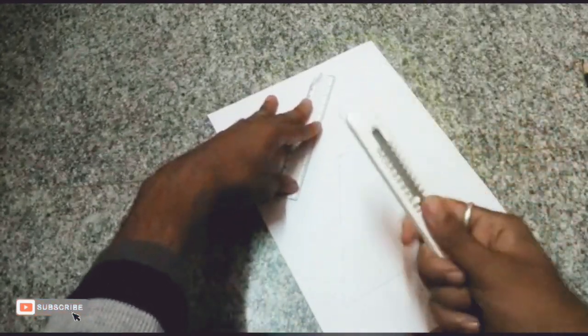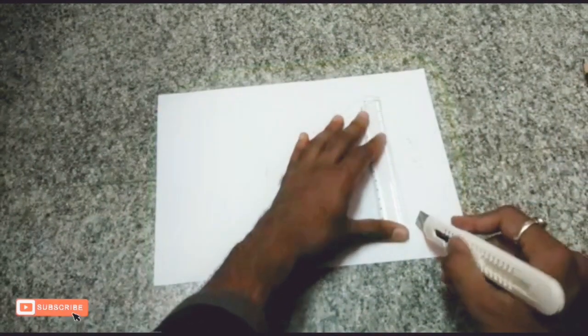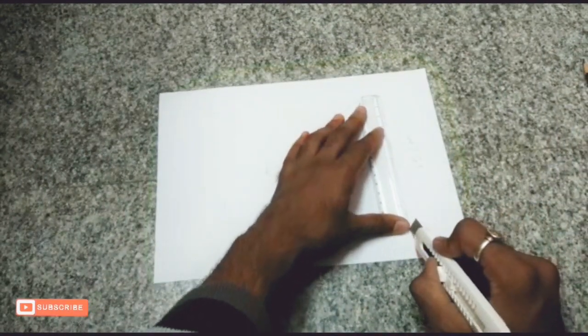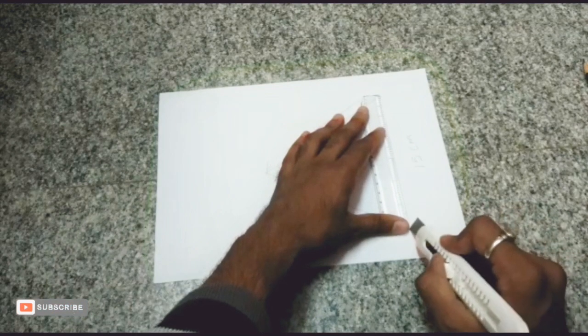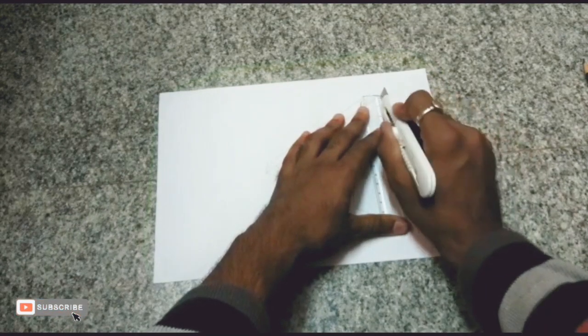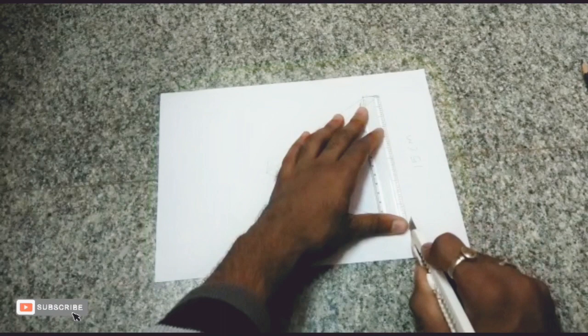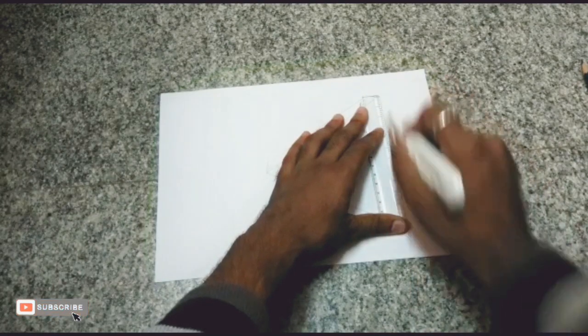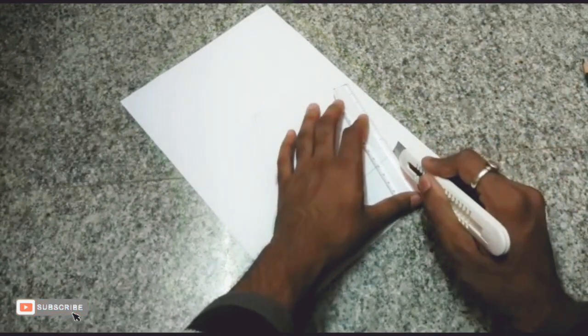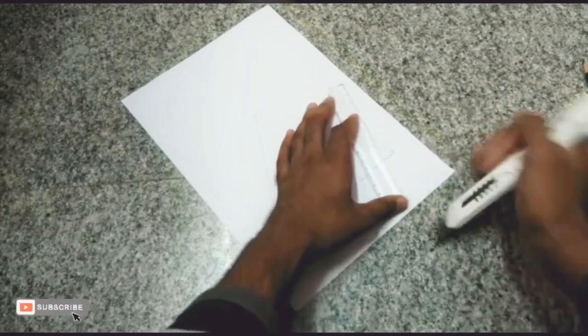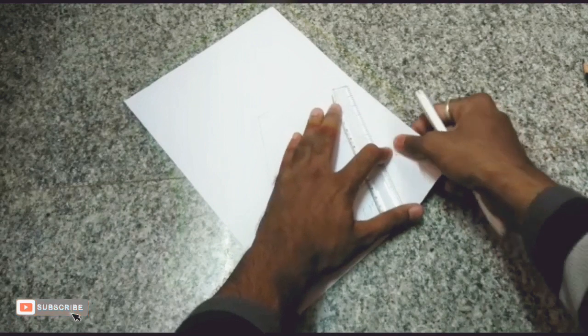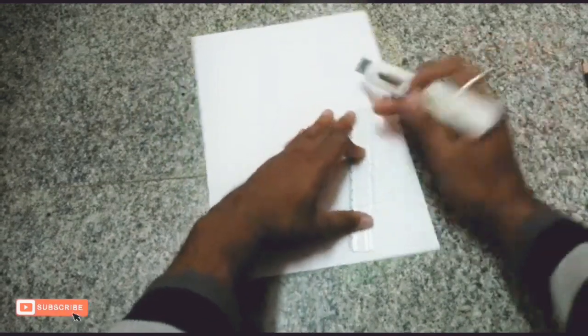After drawing, take a blade and cut the triangle. While using the blade, take care of your fingers and cut the triangle shape very perfectly without any ups and downs. Cut all the drawn parts with the blade.